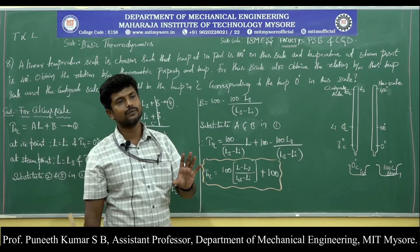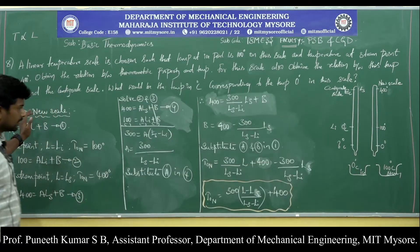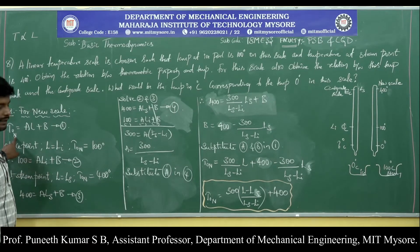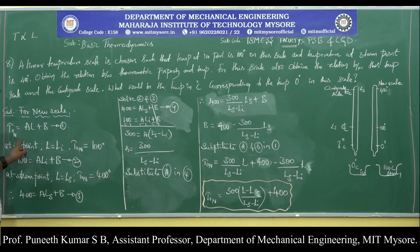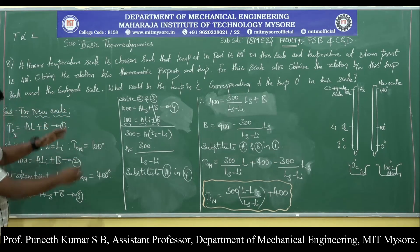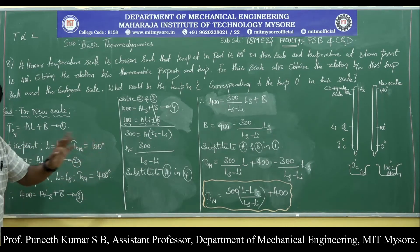Now we will derive the equation for the new scale. Instead of T degree centigrade, I have used the letter N for the new scale. The general form is the same: N = A·L + B, but the constants A and B for the new scale are different from those of the Celsius scale. We restart the equation numbering from 1 since this is for the new scale.